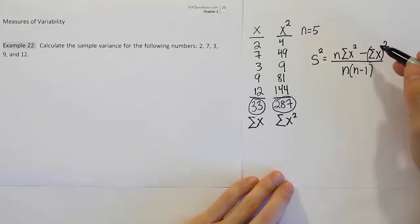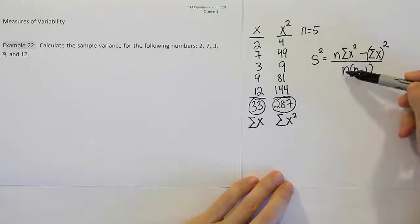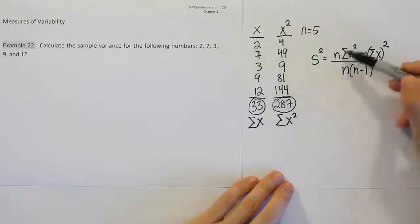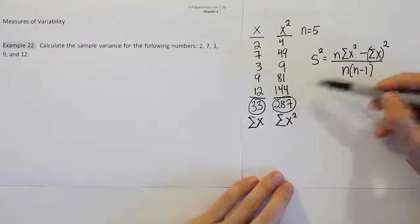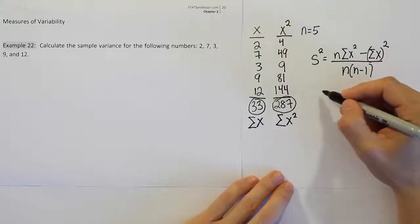That formula looks complicated, but if you really think about it, you have n, so that number is just 5. So all the places where you see n, it's just 5. Then this quantity, the sum of x squared, well, we have the sum of x squared, don't we? We said that that quantity is 287. And finally, the sum of x is 33. So we're just going to be plugging those values in.